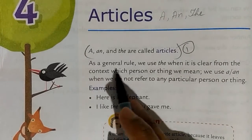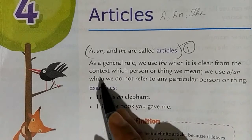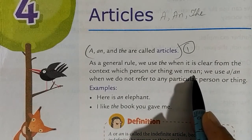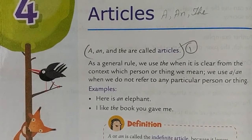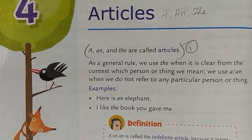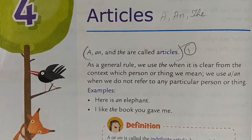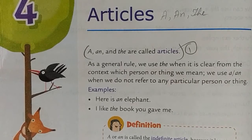As a general rule, we use 'the' when it is clear from the context which person or thing we mean. Basically, 'the' is a definite article. It is used before proper nouns mostly, when we are clear about what the context is — which person or thing is meant.